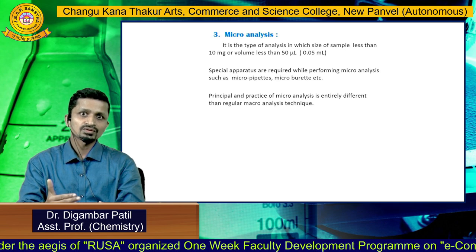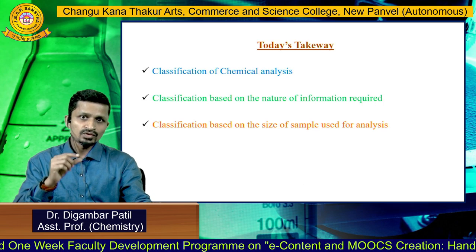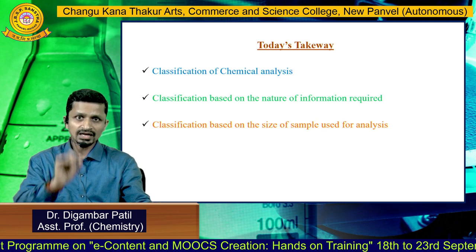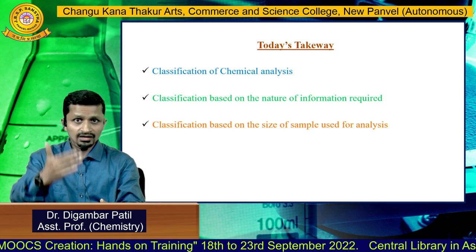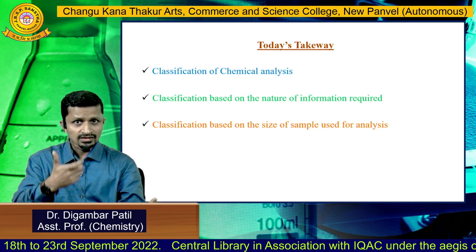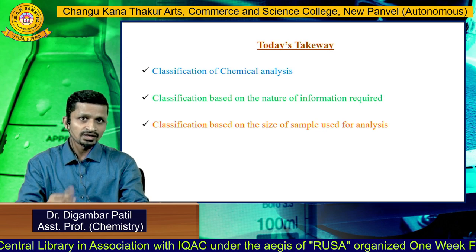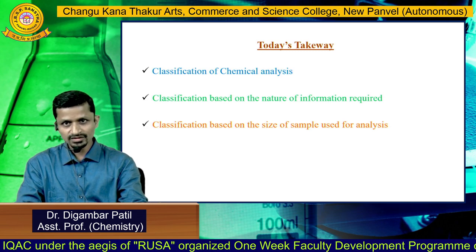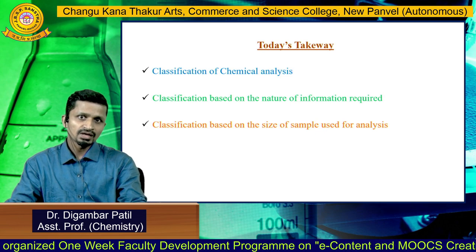Today's takeaway: we learned the classification of chemical analysis. Chemical analysis is classified into two types — based on the nature of information required (giving four types: proximate, partial, trace, and complete analysis) and based on the size of the sample (giving three types: macro, semi-micro, and micro analysis). In the coming videos we will see the classification of methods of analysis. Thank you.